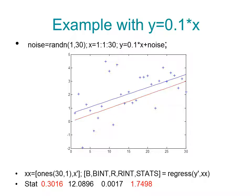And we can get the statistics for that by using the MATLAB function regress. And the statistics include several numbers. The first one, 0.3016, is indeed the R square, and the last one, 1.7498, is an estimate of sigma hat square.